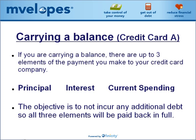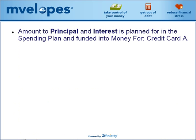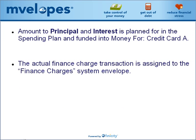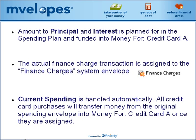Our objective is to not incur additional debt, so all three elements of the payment need to be paid back to the credit card company in full. The amount that we intend to pay to the principal balance of the credit card plus the amount of the finance charge requires a funding goal in the spending plan. This funding goal is associated with the money for credit card A envelope. Finance charge transactions, as they post in your new transactions folder, need to be assigned to the finance charges system envelope. Current spending is handled automatically by the functionality of the money for system envelope. All purchases we make from the credit card will transfer money from the spending envelope into money for credit card A automatically.